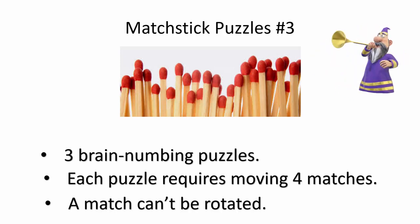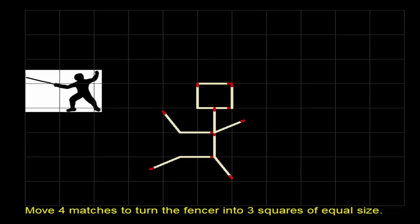Okay, let's see how we go. Here's the first puzzle. We have a shape that looks a bit like a fencer, and the aim is to move four matches so that the fencer turns into three squares of equal size.